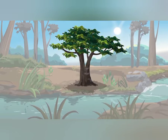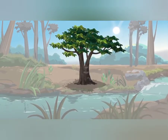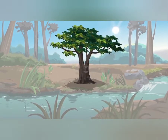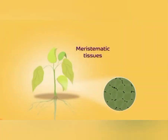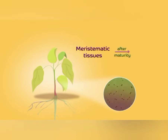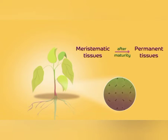Coming to the next type of tissues in the plant, which are permanent tissues. Meristematic tissues upon dividing, they gain maturity and they get a specific structure and function. Once they get the specific structure and function, they get differentiated and they lose their division capacity. Therefore, meristematic tissues upon maturity become permanent tissues. Meristematic tissues are dividing and growing, whereas permanent tissues are non-dividing tissues.